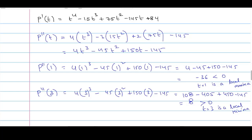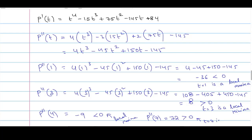Similarly, checking P''(4) and P''(7): substituting 4 in place of t, we get P''(4) = −9, which is less than 0, so t = 4 is a local maximum. And computing P''(7), we get 72, which is greater than 0, so t = 7 is a local minimum.